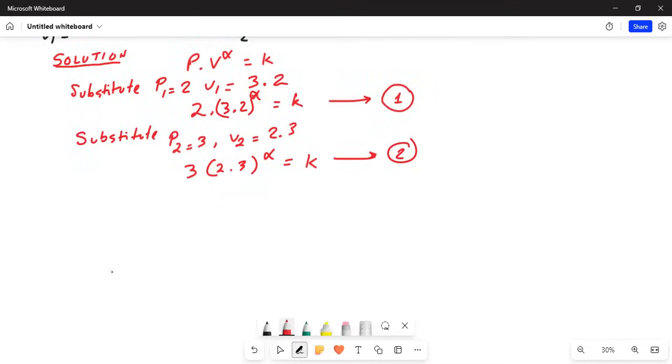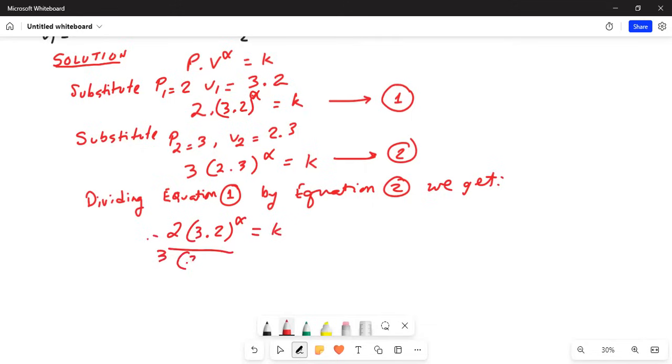Dividing equation 1 by equation 2, we get 2 times 3.2 raised to the power of alpha equals k divided by 3 times 2.3 exponent alpha divided by k. This k and this k will cancel.